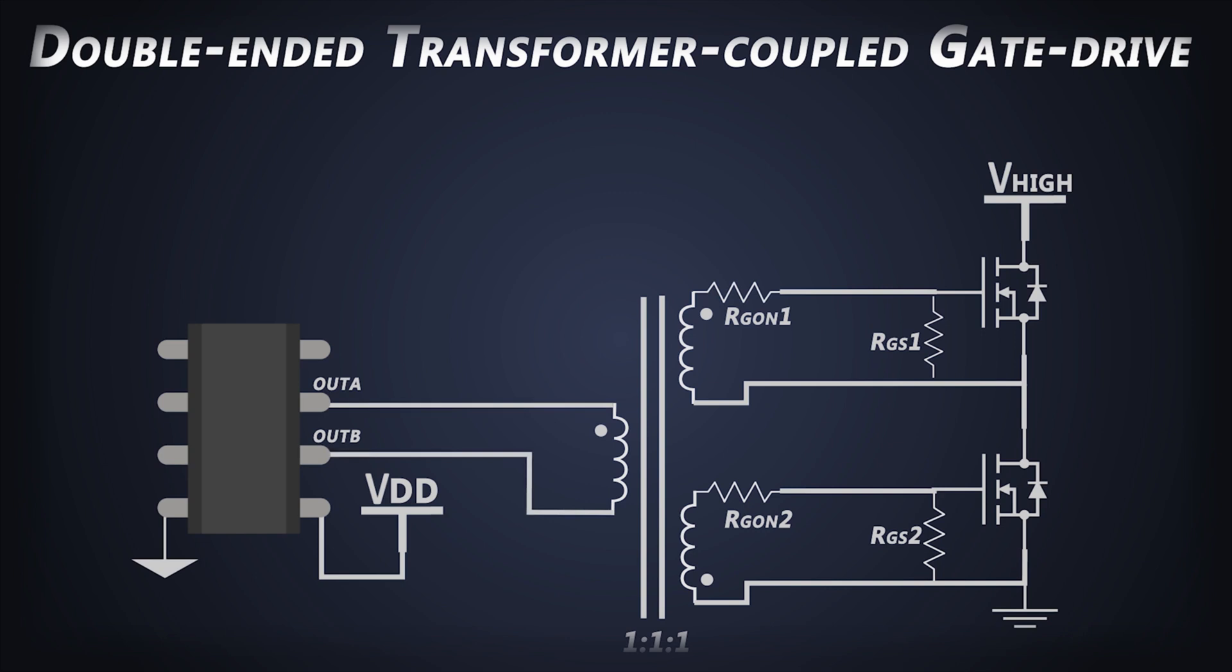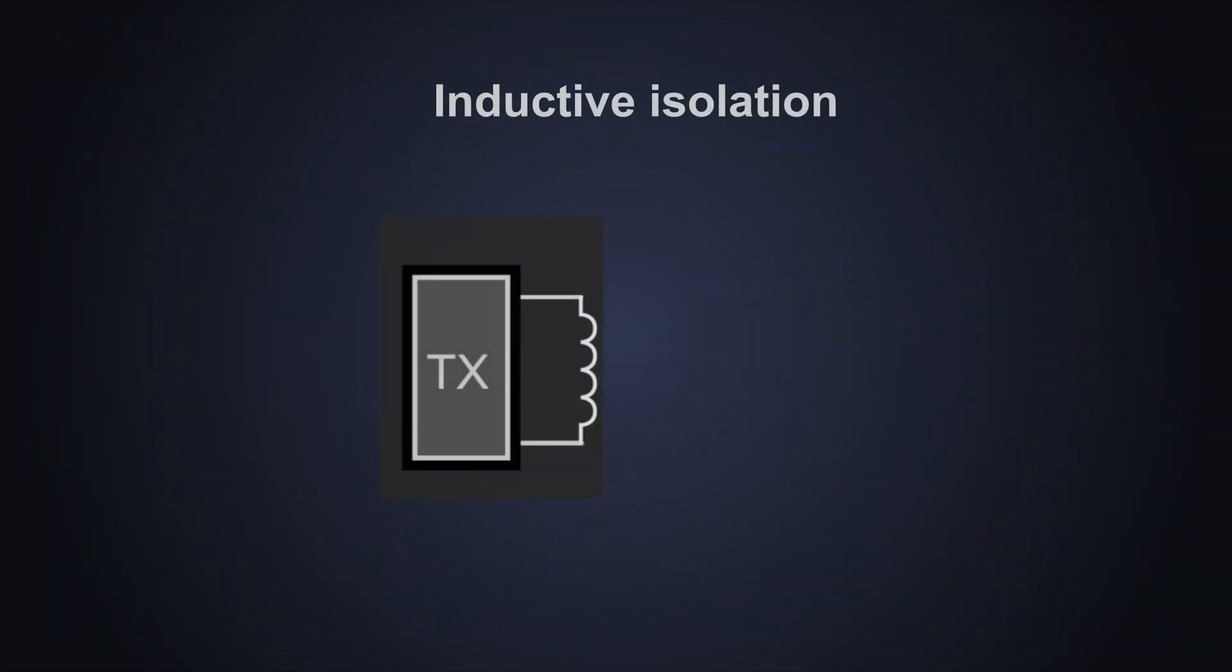To overcome this, we can use the inductive isolation. It is based on transformer based technology. We have seen the use of a transformer for MOSFET driving in our previous videos. Those are based on the same principle. The logic input is used to generate an electromagnetic field and to transfer proportional energy signals across the inductive transformer barrier.